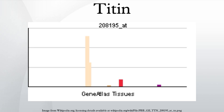Titin is a large abundant protein of striated muscle. An N-terminal Z-disc region and a C-terminal M-line region bind to the Z-line and M-line of the sarcomere, respectively, so that a single Titin molecule spans half the length of a sarcomere. Titin also contains binding sites for muscle-associated proteins so it serves as an adhesion template for the assembly of contractile machinery in muscle cells. It has also been identified as a structural protein for chromosomes. Considerable variability exists in the I-band, the M-line, and the Z-disc regions of Titin. Variability in the I-band region contributes to the differences in elasticity of different Titin isoforms and, therefore, to the differences in elasticity of different muscle types. Of the many Titin variants identified, five are described with complete transcript information available.